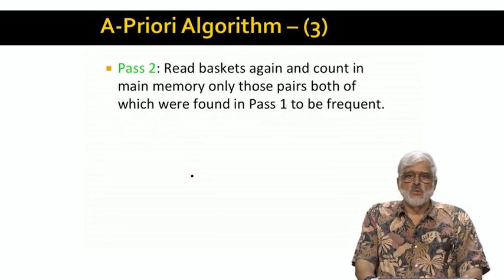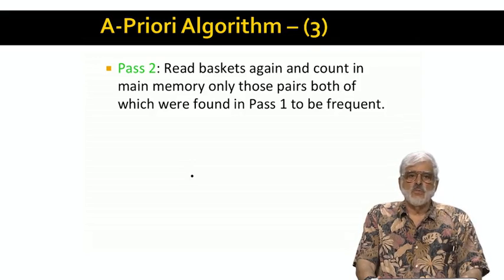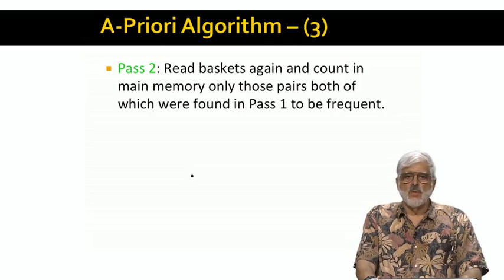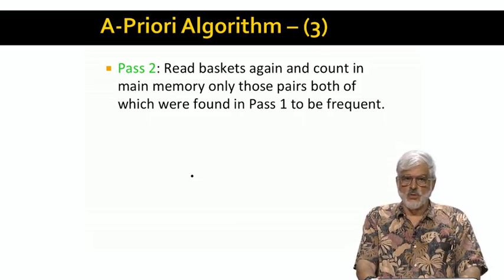Now let's look at pass two, where we read all the baskets from disk again. And as in the naive algorithm, we're going to try to count pairs in main memory. But now we use monotonicity, so we only have to count those pairs of items, both of which are among the frequent items. So, for example, if only half the items are frequent, we need to count only a quarter of all pairs.